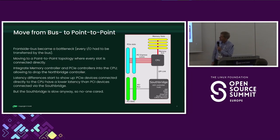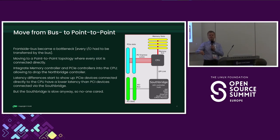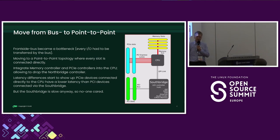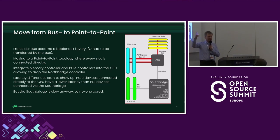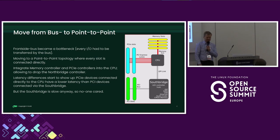But then one figured: you know what, we're having this bus there — frontside bus, anyone? Which turned out to not be a clever idea, because that meant that all I/O, everything you do, has to cross the bus. And what's more, it will actually block access to other instances or other devices on the bus. So the more traffic you shoot about, the more you throttle the other devices.